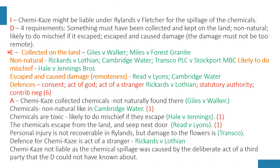Onto the explanation. The first requirement is that something must have been collected or accumulated on the land — the defendant must bring the hazardous material onto their land and keep it there. If the thing is already on the land or naturally occurring, no liability arises under Rylands and Fletcher. The cases of Giles v Walker and Miles v Forest Granite illustrate this. In Giles v Walker, seeds from thistles naturally on the defendant's land blew onto the claimant's land and damaged his crops, but the defendant was not liable because he hadn't brought the thistles there.